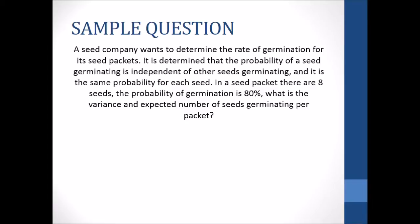So for the expected value, where X is our number of germinating seeds, the expected value of X is the number of trials times the success rate. So NP. So 8 seeds times 0.8 gives us about 6.4 seeds that germinate.